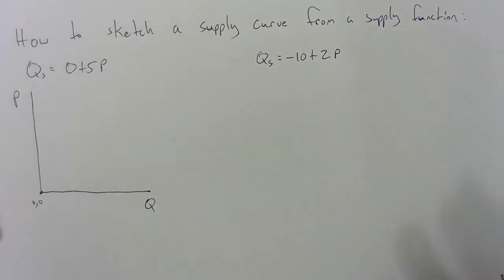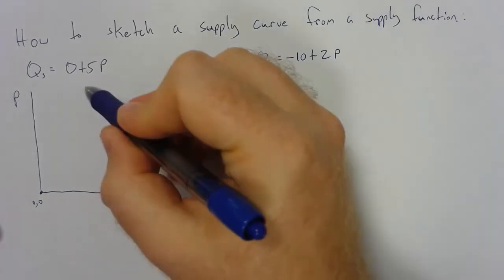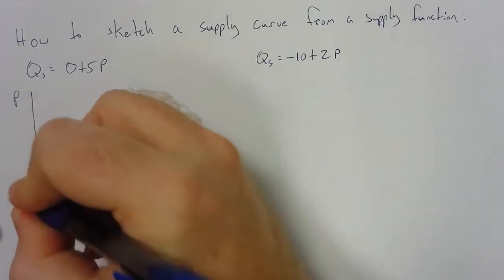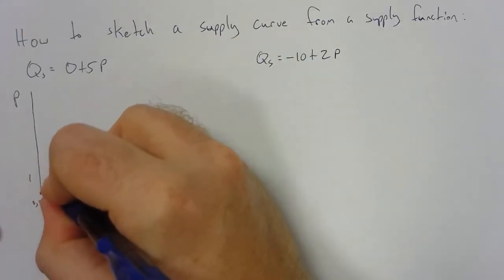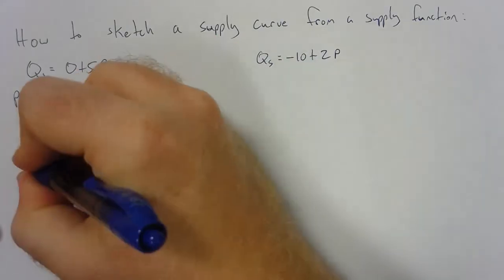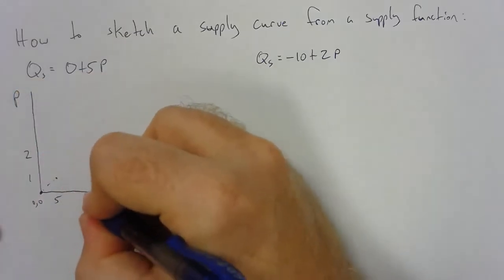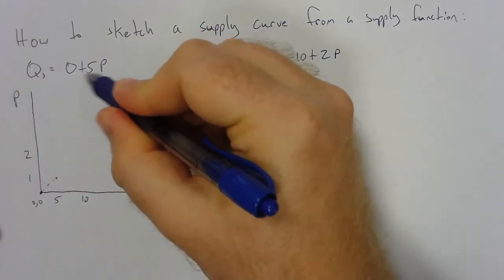Now we just have to figure out the slope. So if price increases by one, price equals one times five, quantity is going to be five. Price goes up to two, we would expect quantity to go up to ten. Two times five equals ten.